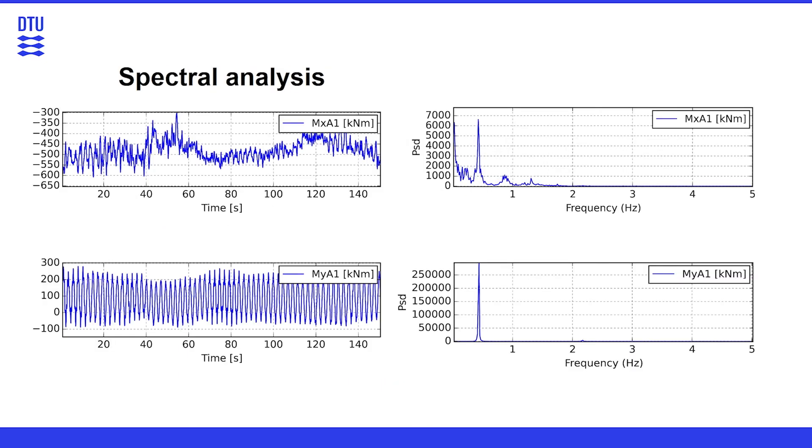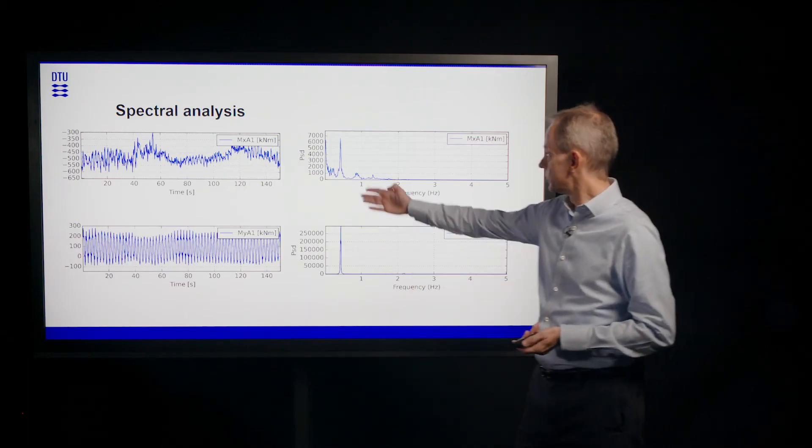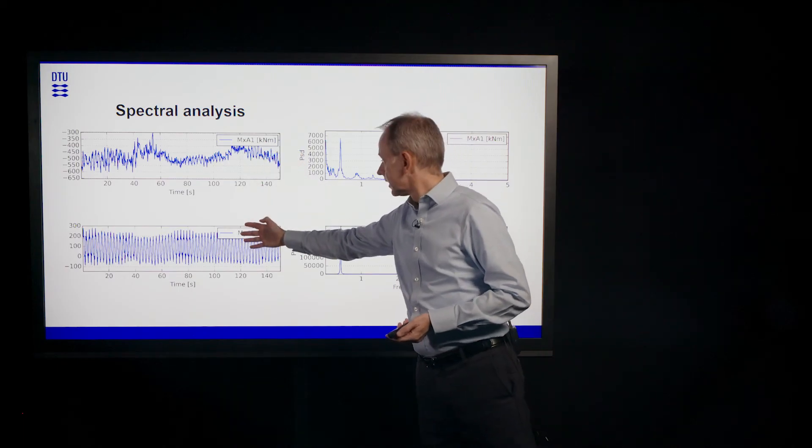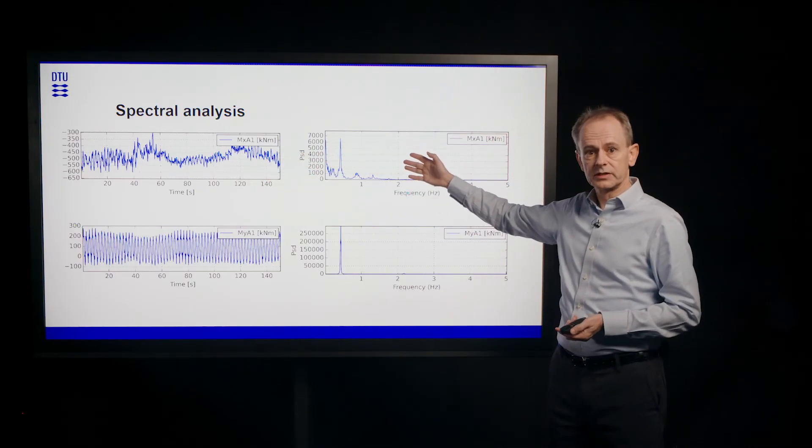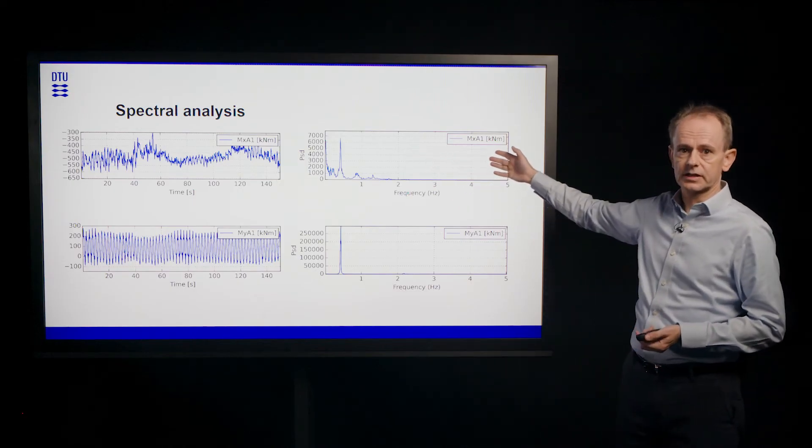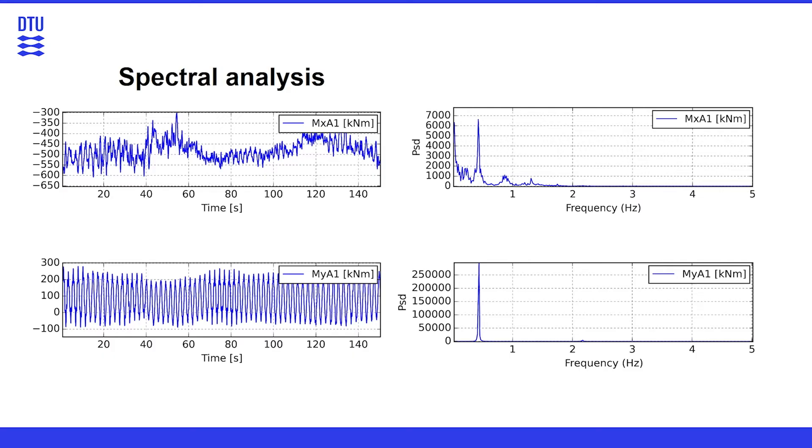We also apply a more detailed analysis to selection of time series. Here we see two time series on the left hand side and two blade loads. And here on the right hand side we see what we call a frequency analysis of that, a power spectral density function. This is now a representation of the characteristics of the load measured time series, but now in the frequency domain. And here we can see how much energy do we have in that signal at various frequencies.